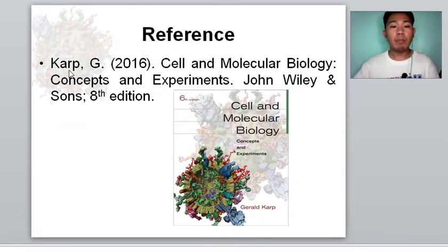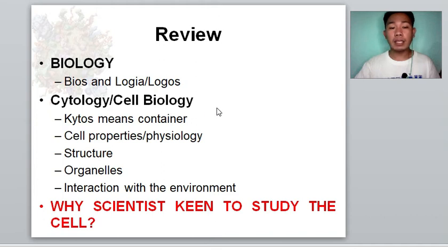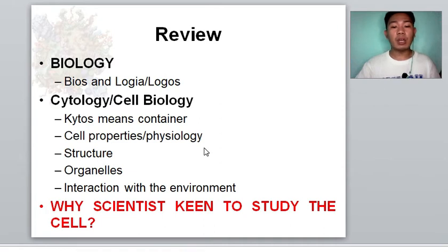For our reference, we will use the book of Karp, which is the Cell and Molecular Biology: Concepts and Experiments. As a review, we all know that biology is the study of life, which came from the Greek words bios and logia or logos. When we are talking about cytology, cytology is the study of cells — from the Greek word kytos, meaning container. In cytology, we study the cell properties and the physiology of the cell, their structures, the organelles, and the interaction with the environment. The key question is: why are scientists keen to study cells?